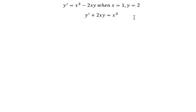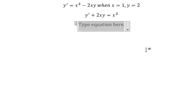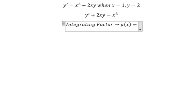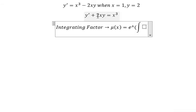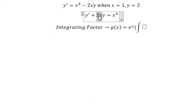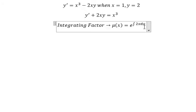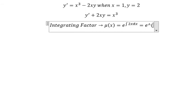Next, we have the original function and the first derivative of the function. We can use the integrating factor. So we can put μ(x) equals e to the power of the integral. We see that 2x — that's the integrating factor. So we put 2x in here. The integral of 2x gives us x squared.